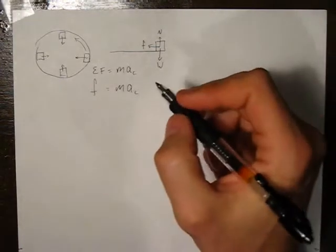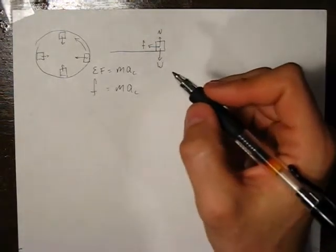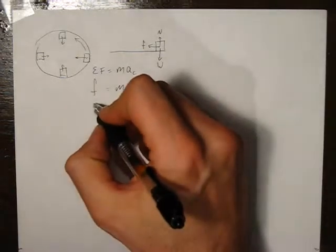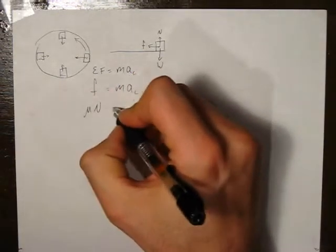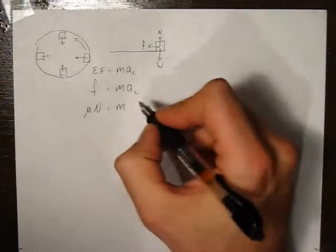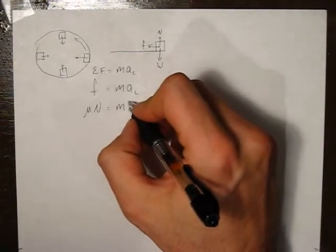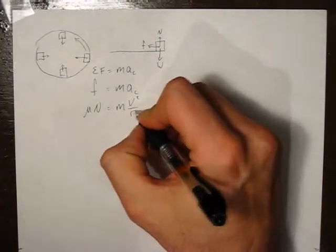In the case of a rotating object, well an object sitting on the surface, the friction happens to be mu times n, and the centripetal acceleration is v squared over r.